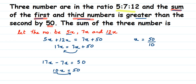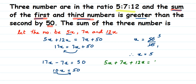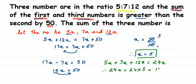So x equals 50 divided by 10. Cancelling, we get x equals 5. Now they're asking for the sum of the three numbers. The three numbers are 5x, 7x, and 12x, so the sum is 5x plus 7x plus 12x, which equals 24x. Substituting x equals 5, we get 24 multiplied by 5, which equals 120.